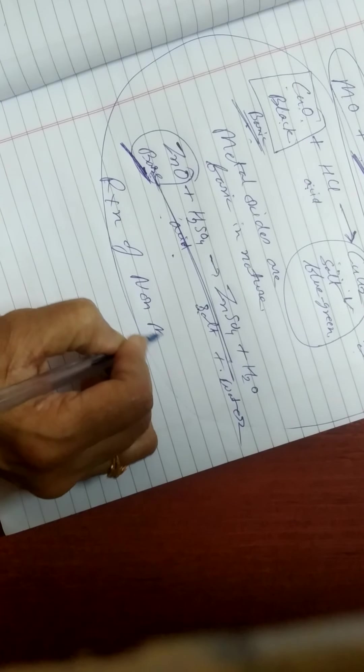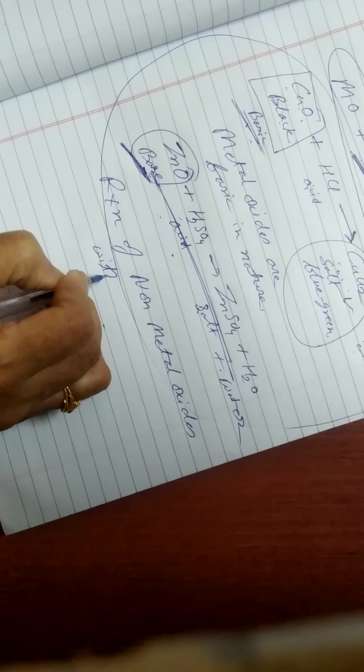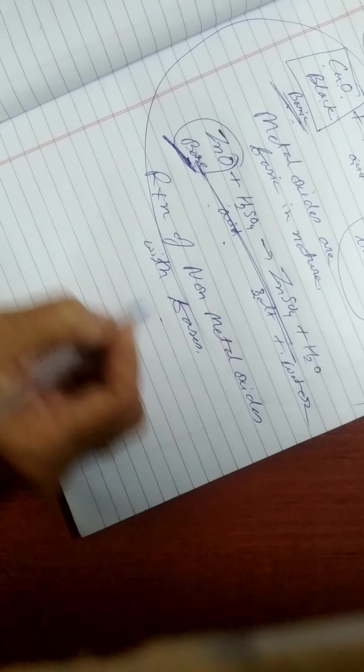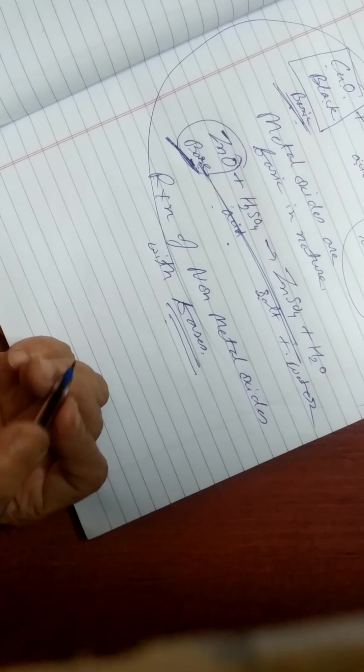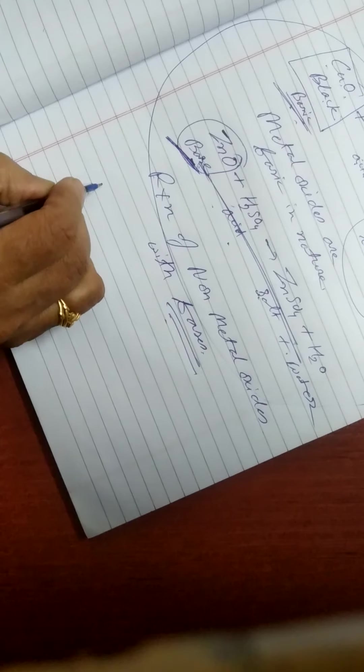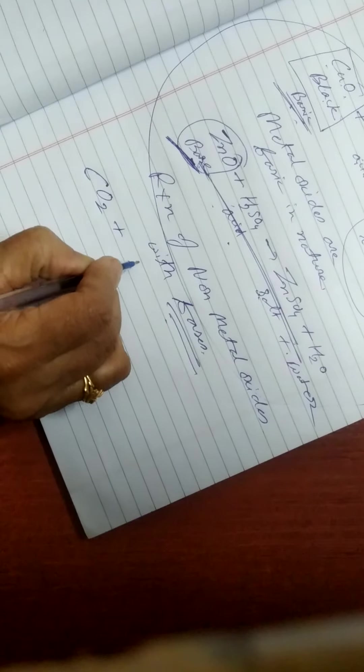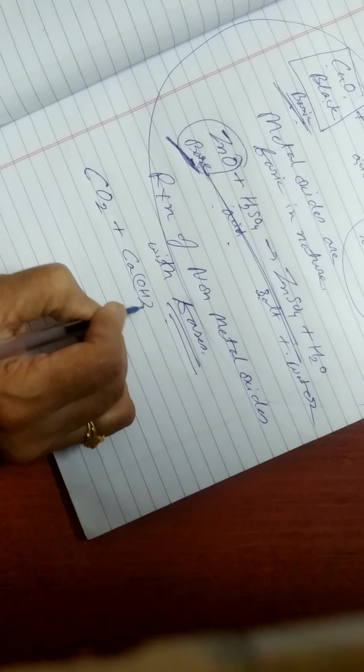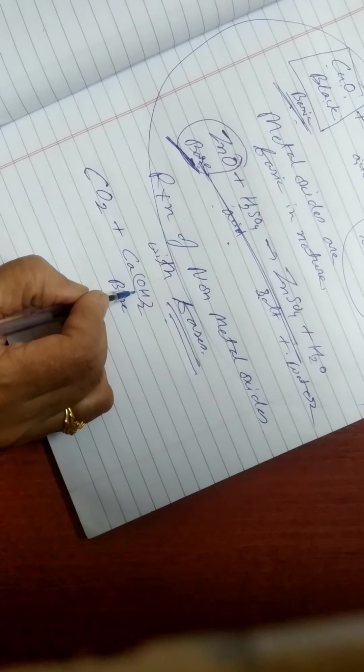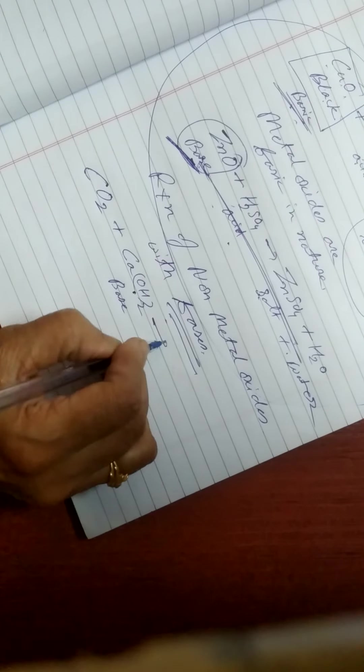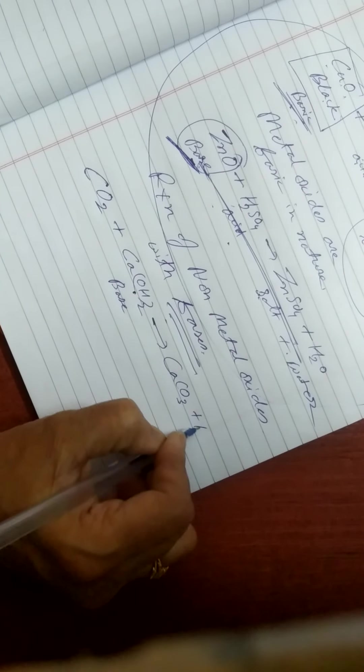Next is the reaction of non-metal oxides with bases. Non-metals include carbon, sulfur, nitrogen, and phosphorus. You studied before about the lime water and carbon dioxide reaction. This is a base - bases are those substances which liberate OH- ion in solution.